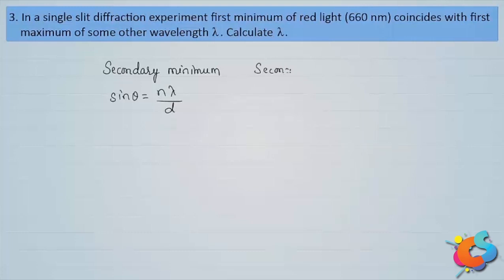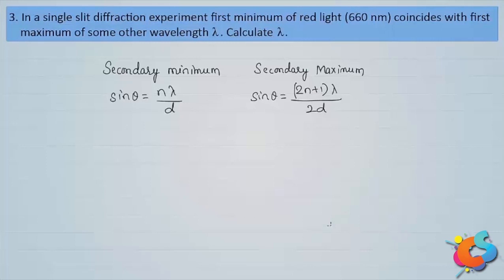The angular position of secondary minimum is given by sin θ = nλ/d. The angular position of secondary maximum is given by sin θ = (2n+1)λ/2d. Since the first minimum of red light and the first maximum of the unknown wavelength overlap, their angular positions must be equal — this is the key condition.